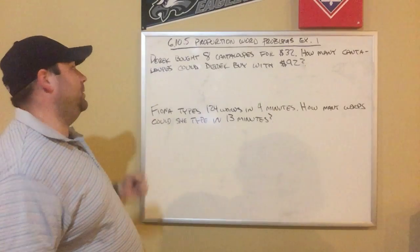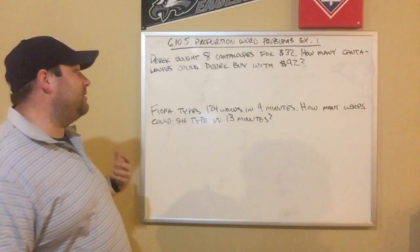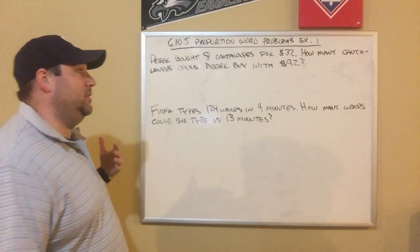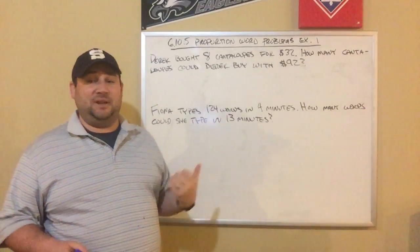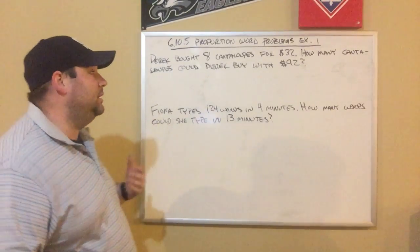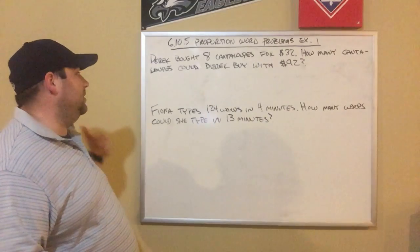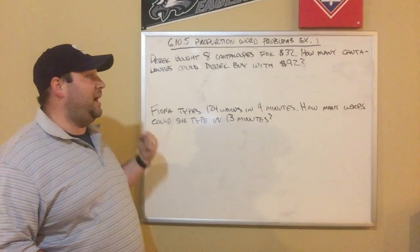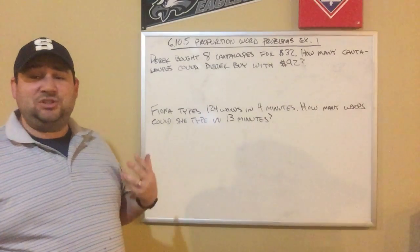So when I read my first question: Derek bought eight cantaloupes for $32. How many cantaloupes could Derek buy with $92?